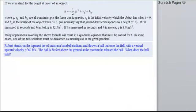Okay, here's an application problem for you. If we let h stand for the height at time t of an object, and we have this formula, where g, v sub 0, and h sub 0 are all constants, g is the force due to gravity, v sub 0 is the initial velocity, which the object has when time is 0, and h sub 0 is the height of the object when time is 0. We normally say that ground level corresponds to a height of 0.